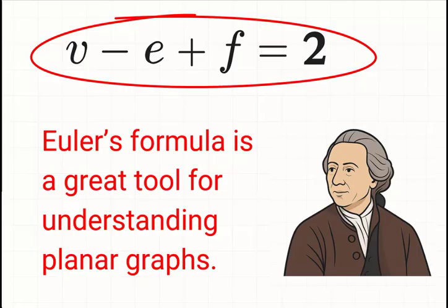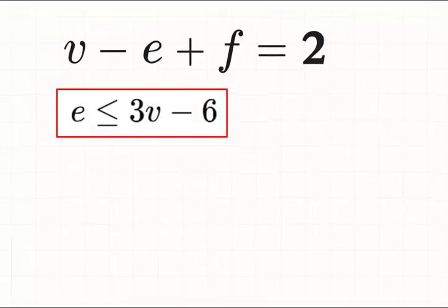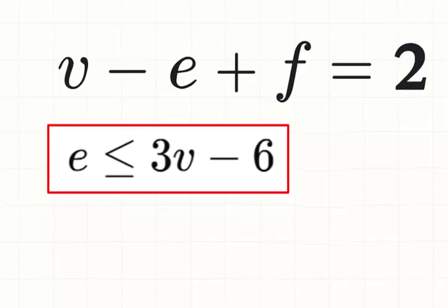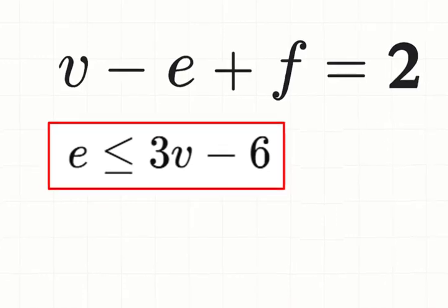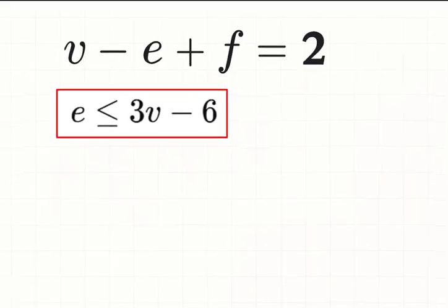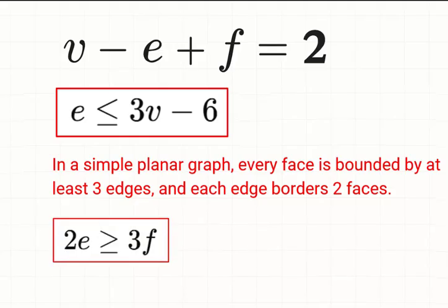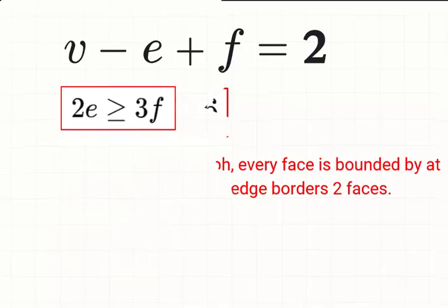Now we'll derive an important inequality. E is less than or equal to 3 times V minus 6. This must hold for any simple connected planar graph with at least three vertices. Here's how. From Euler's formula, V minus E plus F equals 2. In a simple planar graph, every face is bounded by at least three edges, and each edge borders two faces.